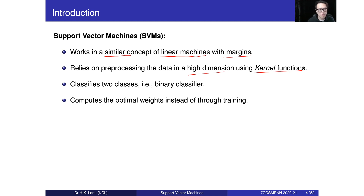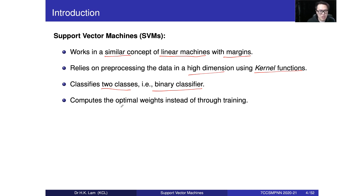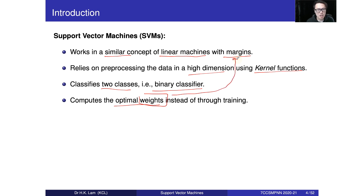Since SVM is a binary classifier handling only two cases, we use it as a building block for multi-class classification by combining multiple binary classifiers. When designing the SVM, we talk about the optimal weight, meaning there is optimization theory behind it to determine which connection weights to select in order to construct the SVM.